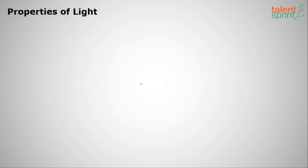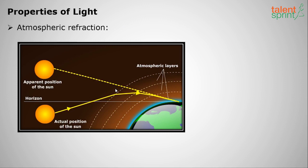Atmospheric refraction explains early sunrise and delayed sunset. Sunlight enters from space through atmospheric layers like the troposphere and stratosphere. Because of the change in medium, the sun's rays refract, making the sun appear at a position different from its actual position. Stars also appear to twinkle due to atmospheric refraction.